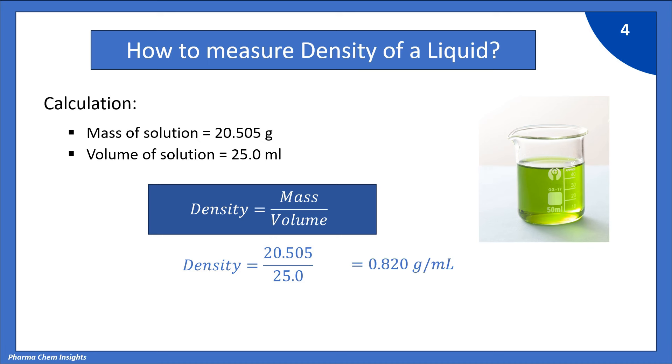So, by calculating, we get 0.820 g per ml. So, density of given solution is 0.820 g per ml.